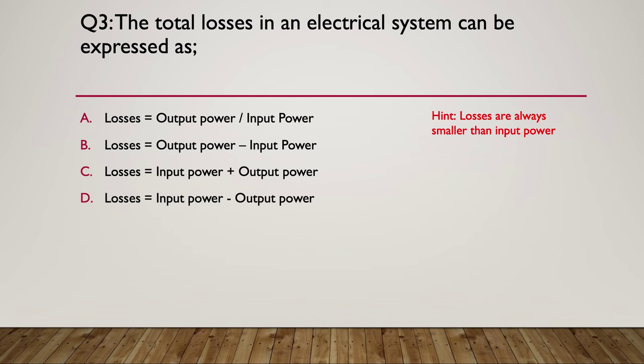Here's your hint: losses are always smaller than the input, and the input is always larger than the output. The answer to question three is D: losses equal the input power minus the output power. Whatever the difference is — whatever's left over — has to be the losses.